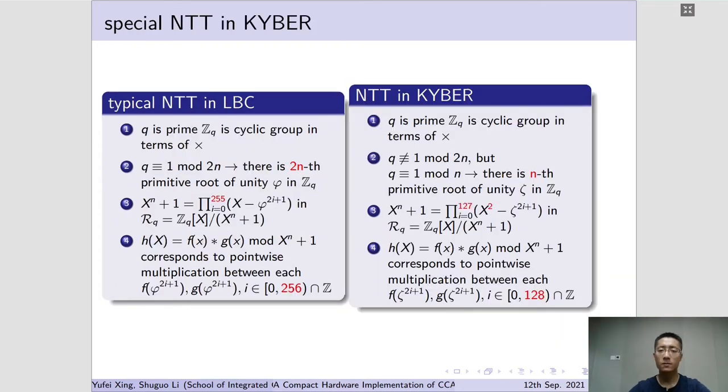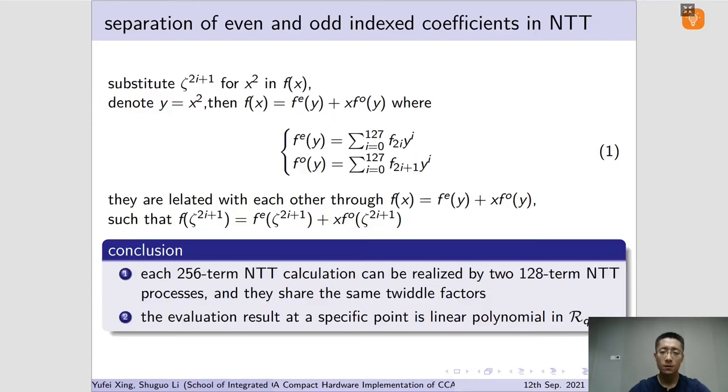As there is no 2n-th primitive root of unity in field Zq, the cyclotomic polynomial modulus would not factor into 2n linear polynomials, but n quadratic polynomials. Kyber adopts NTT in polynomial multiplication. Then both polynomial multiplications should be evaluated at specially selected points. Then two facts follow. The first fact is, the evaluation process actually divides into two parts, the part with even indexed coefficients and the part with odd indexed coefficients. They can be conducted concurrently, and the twiddle factors are shared between these two parts.